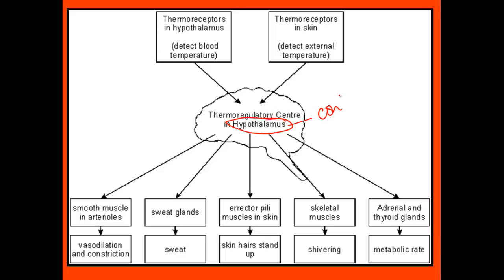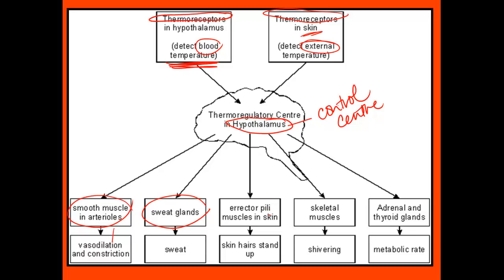If we're talking about temperature in the body, the part of the brain that controls temperature is the hypothalamus. The hypothalamus is the control center. The control center receives information from thermoreceptors — heat receptors — both in the blood that detect blood temperature and in the skin that detect external temperature changes. The brain can then turn on smooth muscles in the arterioles, sweat glands, muscles that control the hairs in your skin, skeletal muscles that control your shivering, and glands that control your metabolic rate.